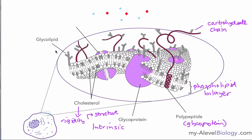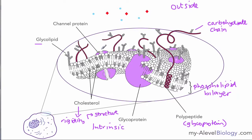When a carbohydrate chain is attached to a phospholipid molecule, we call it a glycolipid — a carbohydrate chain attached to a lipid. The next component is a channel protein, which is also an intrinsic protein because it spans the whole membrane, but it has a channel that goes all the way through to the other end. This means substances can travel through the channel from the inside of the membrane to the outside.